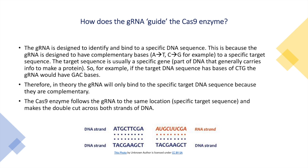How exactly does the guide RNA guide the Cas9 enzyme to the correct location in the genome? The guide RNA is designed to identify and bind to a specific DNA sequence in the target's genome, because it has complementary bases to that sequence. Complementary bases are, for example, adenine to thymine (A to T), and cytosine to guanine (C to G), and vice versa.